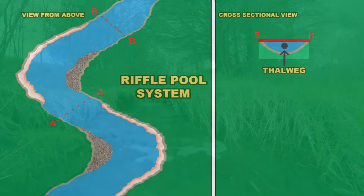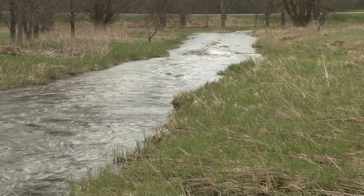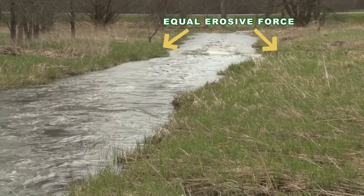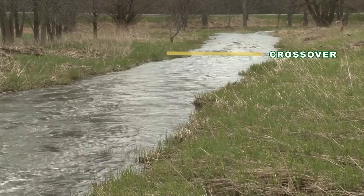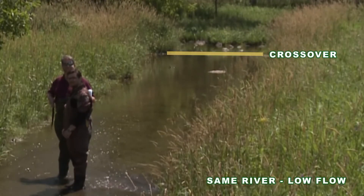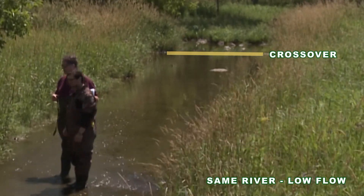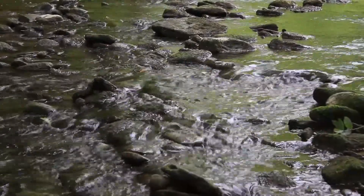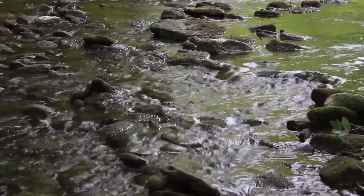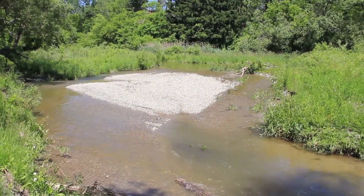A crossover is the location on a stream where the flow of the river switches from being an area of erosion to an area of deposition. At this location, the stream applies equal erosive force on both sides of the bankfull channel, creating equal elevations on the banks, and the main concentration of flow is in the middle of the channel at bankfull flows. Since it is a deposition zone for bedload, the materials are coarser and relatively uniform in size and depth across the channel. How well the channel reflects these features is dependent on how stable the channel is and how much time has passed since the last bankfull event.